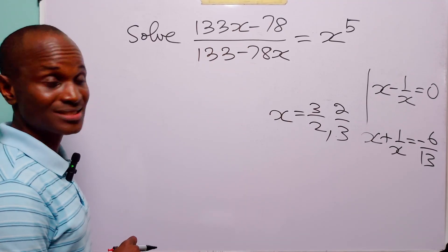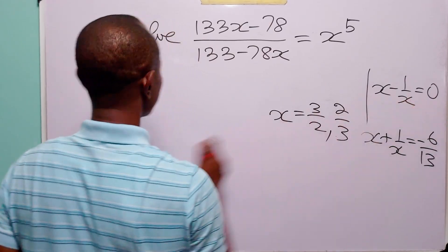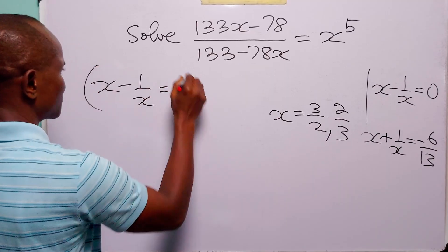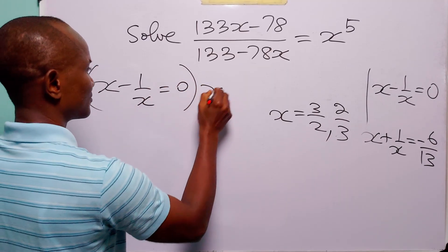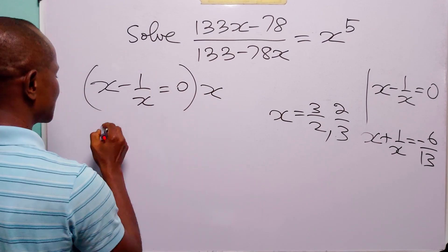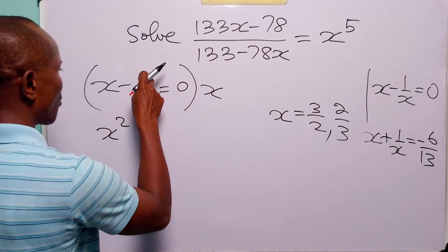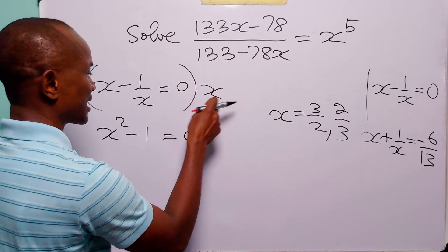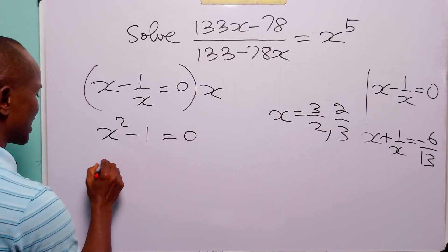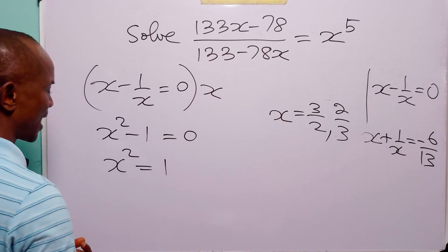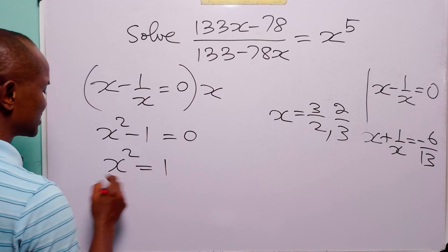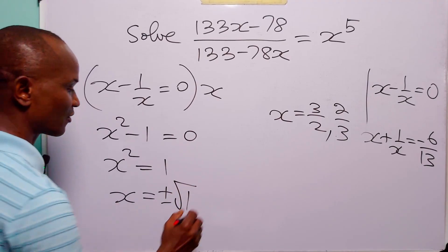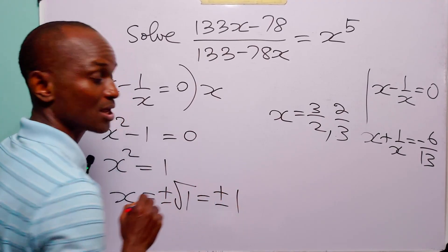Finally, for the last equation, we have x minus 1 over x equals 0. Let us multiply through by x to get rid of the fraction. x times x is x squared, and 1 over x times x is 1, so we have x squared minus 1 equals 0, giving x squared equals 1. Taking the square root of both sides, x equals plus or minus the square root of 1, which of course equals plus or minus 1.